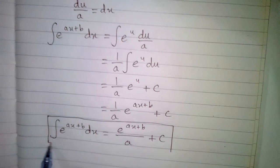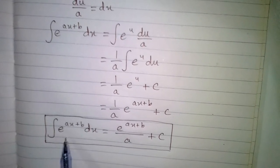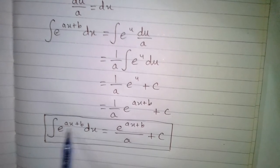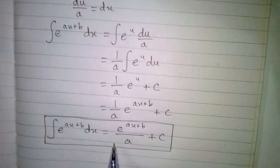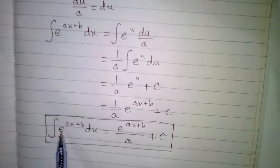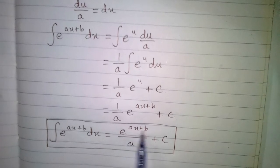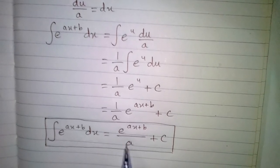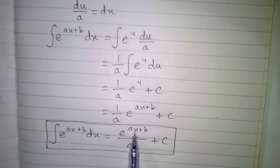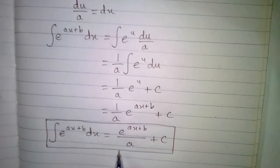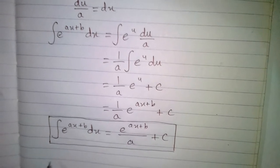We can now use this integral as a formula. If we have a linear factor as a power of e, which is ax plus b, then the integral of e to the power ax plus b is equal to e to the power ax plus b divided by the derivative of this linear factor, which is a, or simply the coefficient of x.